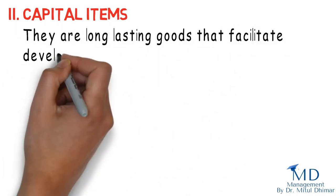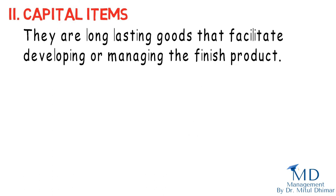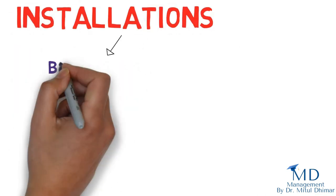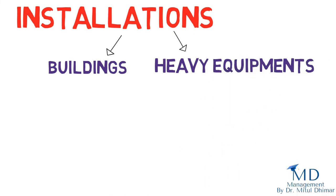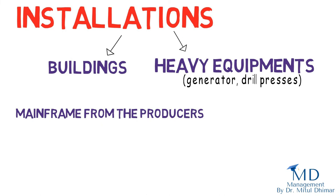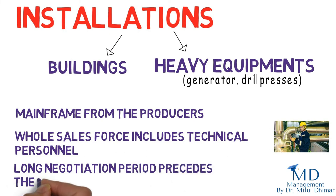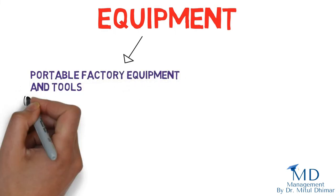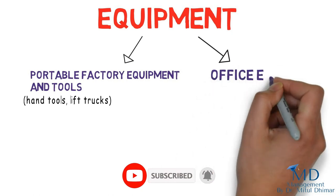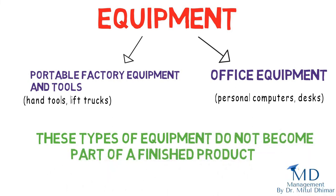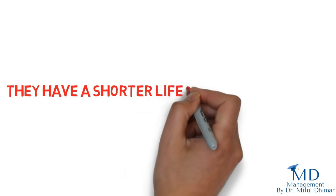Number two: capital items. They are long-lasting goods that facilitate developing or managing the finished product. They include two groups: installations and equipment. Installations consist of buildings and heavy equipment such as generators, drill presses, and mainframes. Equipment comprises portable factory equipment and tools — hand tools, lift trucks — and office equipment such as personal computers and desks. Equipment does not become part of a finished product; it has a shorter life than installations but a longer life than operating supplies.